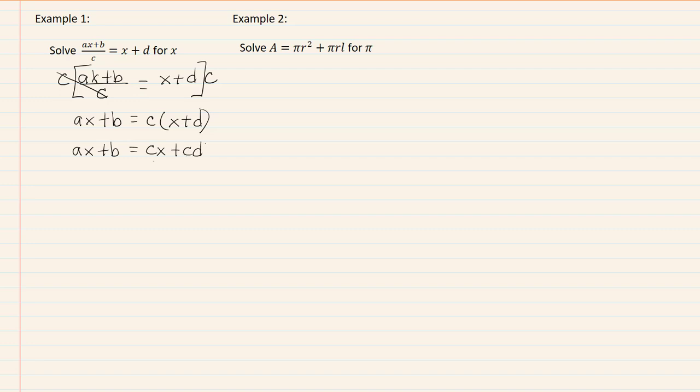Now we want to put all the terms that have the variable we're solving for on one side, so I'm going to move my cx over. And we want all the other terms that don't contain our variable to be on the other side, so that means I'm going to subtract b. So I now have ax minus cx equal to cd minus b.